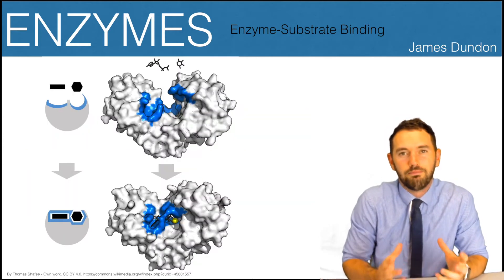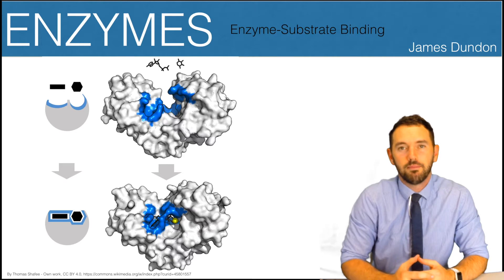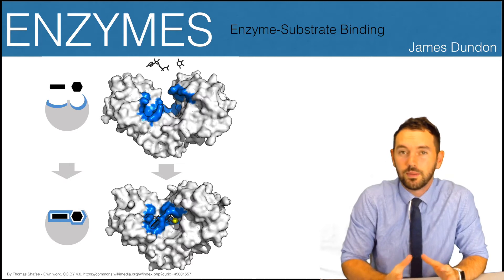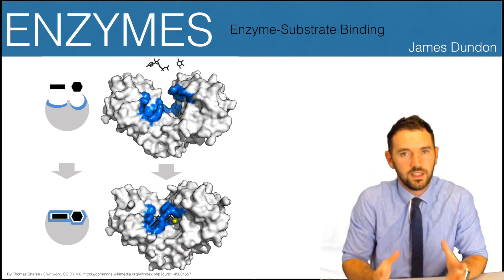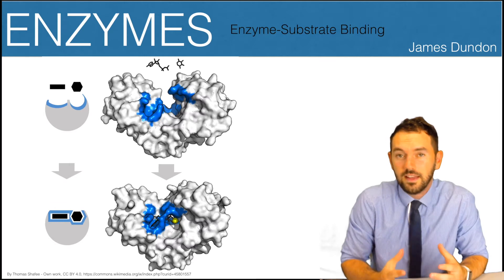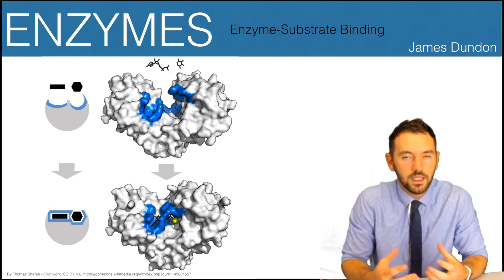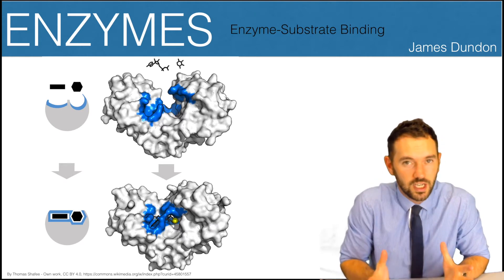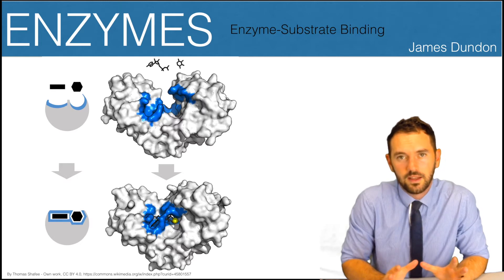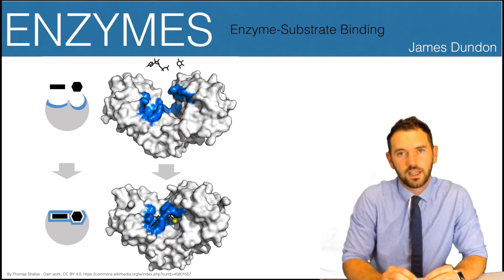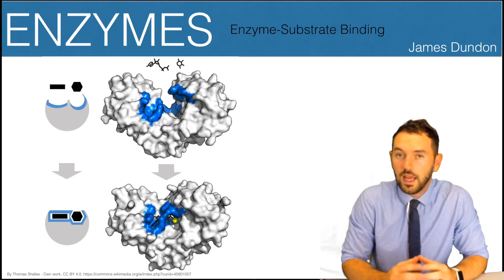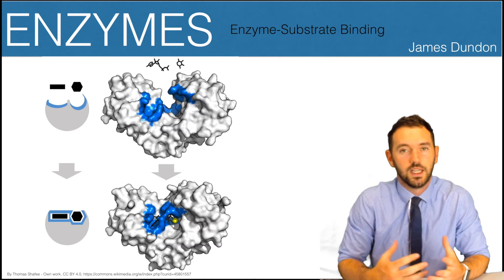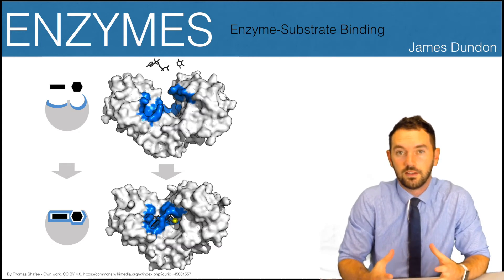Enzymes are large macromolecules and biological catalysts, meaning they speed up chemical reactions - and sometimes without this, those reactions wouldn't even occur, particularly in the human body. Like all catalysts, enzymes do this by lowering the activation energy needed for reactions to occur, and they don't get changed themselves. However, enzymes differ from other catalysts because they're very specific - they'll generally only work with just one substrate.